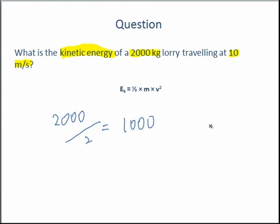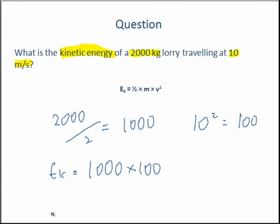Then we need to find out what our speed squared is. 10 squared equals 10 times 10, which is 100. So essentially, Ek equals 1,000 times by 100. Our answer is 100,000 joules.